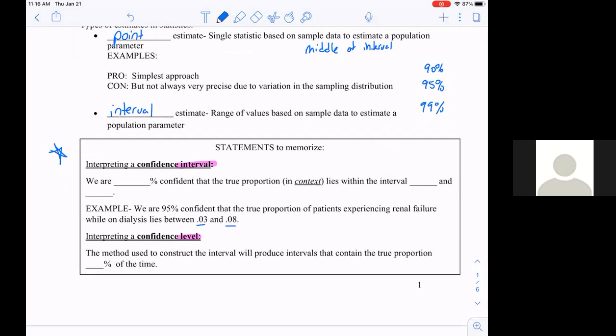That included the three parts we're going to need. Somewhere you said 95 percent confident, you included context, and you included the interval listed. When I grade your interpretations, those are the three things I look for. You told me how confident you were, what you're confident about, and what that interval was.